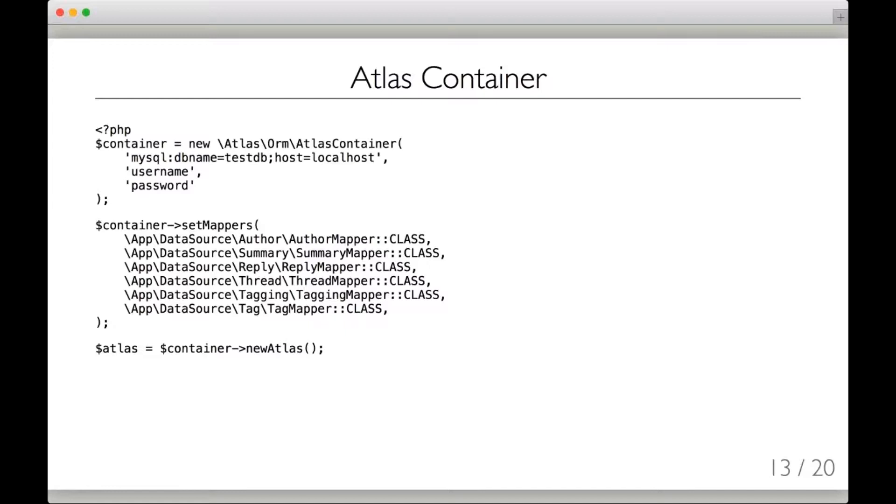Here's how we would build a container of different mappers in Atlas. In this case, we have something like a forum system where there are threads that are written by authors. There's a summary on each thread, each thread can have many replies. The replies themselves can have authors. There are tags and taggings on each thread. We put them all together with a database connection, then we say here are the mappers that are in Atlas, and then we say container, give us back a new Atlas object.